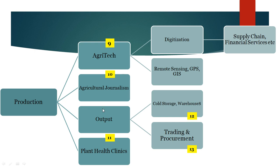Again, when we have the output ready but the processing units are overloaded, or you don't want to sell your produce, or you want to fetch higher prices in the market, cold storages and warehouses come into picture. Next is trading and procurement. Government has made it easy through ENAM, or Electronic National Agriculture Market.